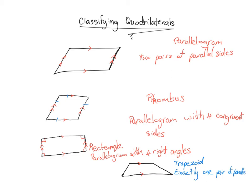With this in mind, I should be able to draw any of these quadrilaterals with the symbols — either the arrows, the hash marks, or the right angle marks — and you should be able to tell me if I've drawn a parallelogram, a rhombus, a rectangle, or a trapezoid.